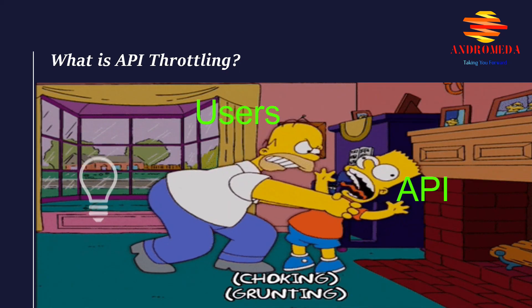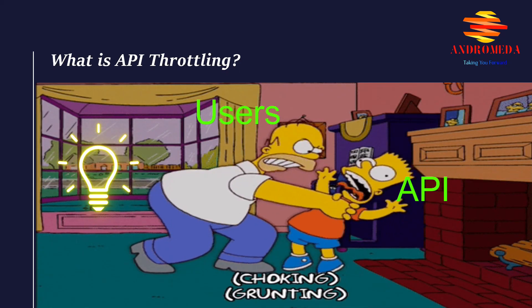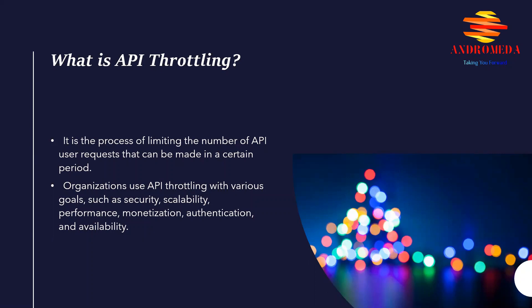API throttling is the process of limiting the number of API requests a user can make in a certain period. An application programming interface functions as a gateway between a user and the software application.